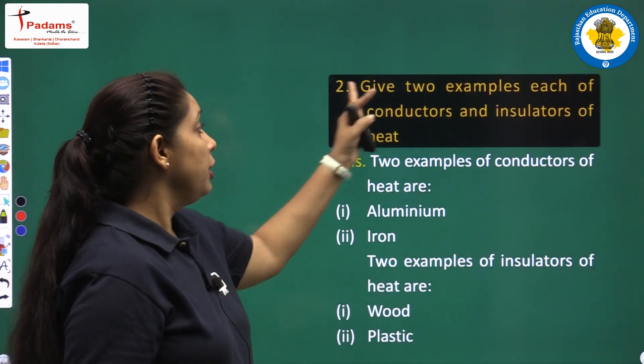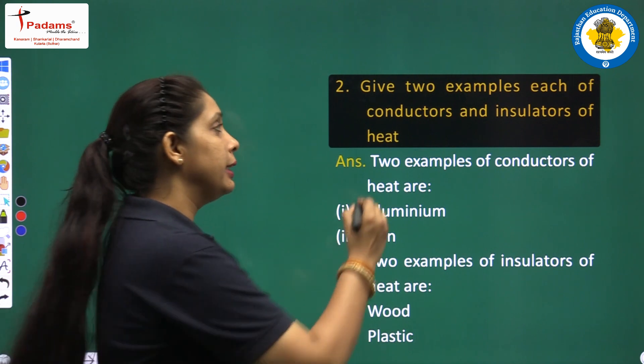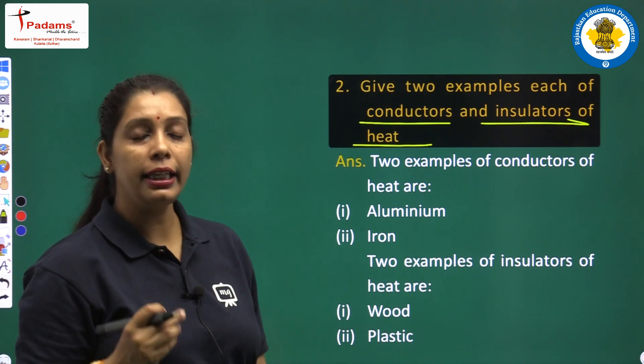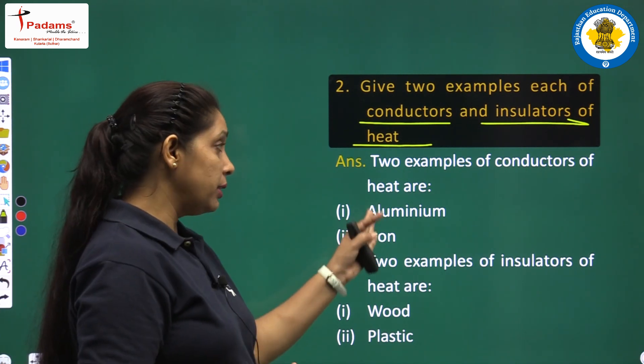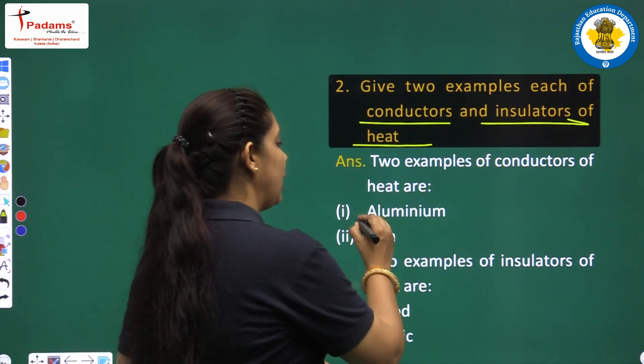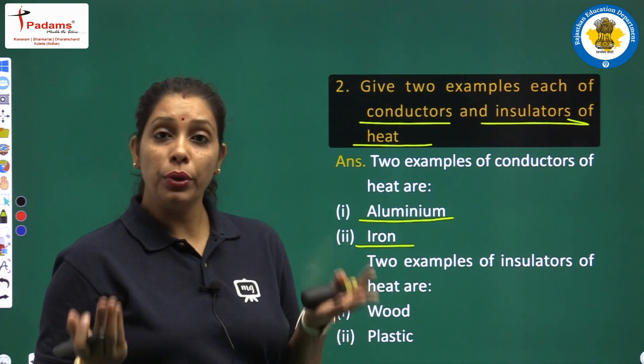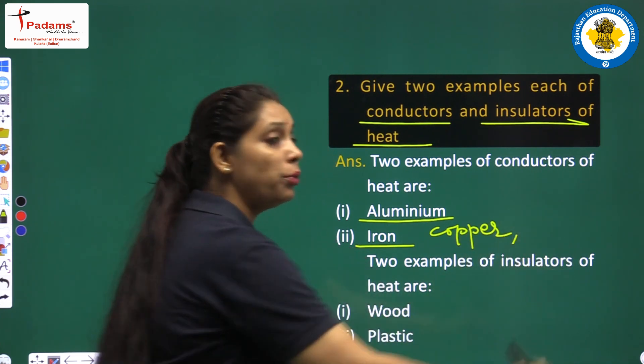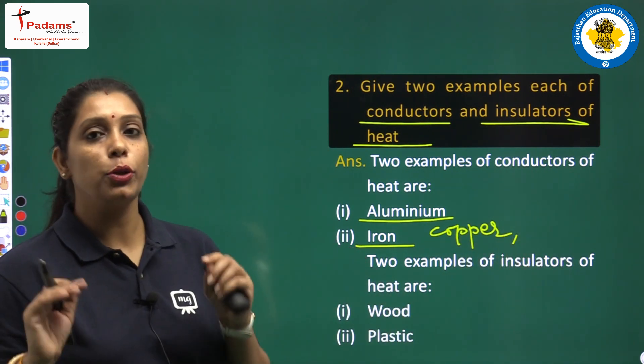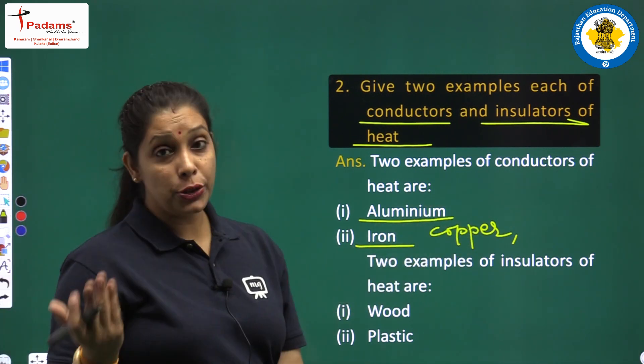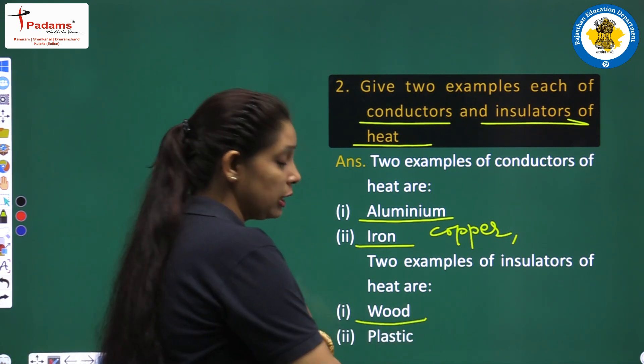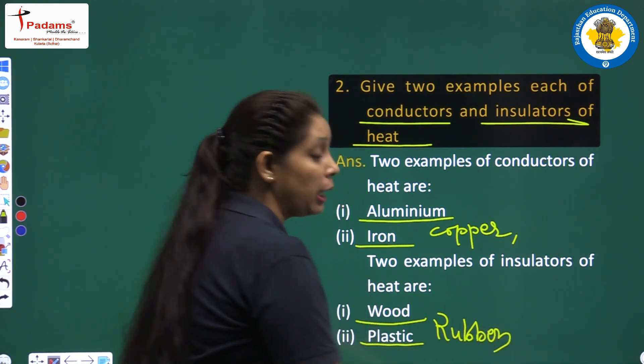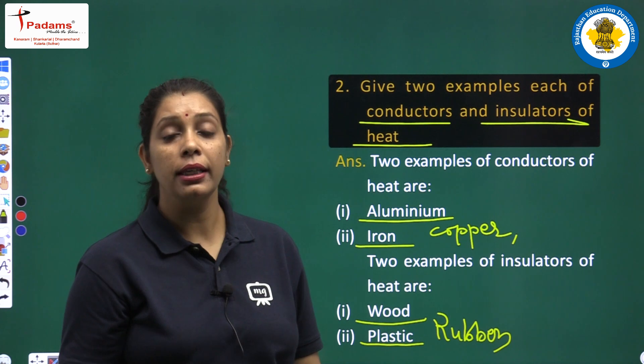Proceed to the next question. Question number 2: Give two examples each of conductors and insulators of heat. This is a very easy question. We know the examples of conductors of heat are aluminum, iron. You can also write copper. Two examples of insulators: plastic is insulator. You can also write rubber. Sometimes we write glass tubes also.